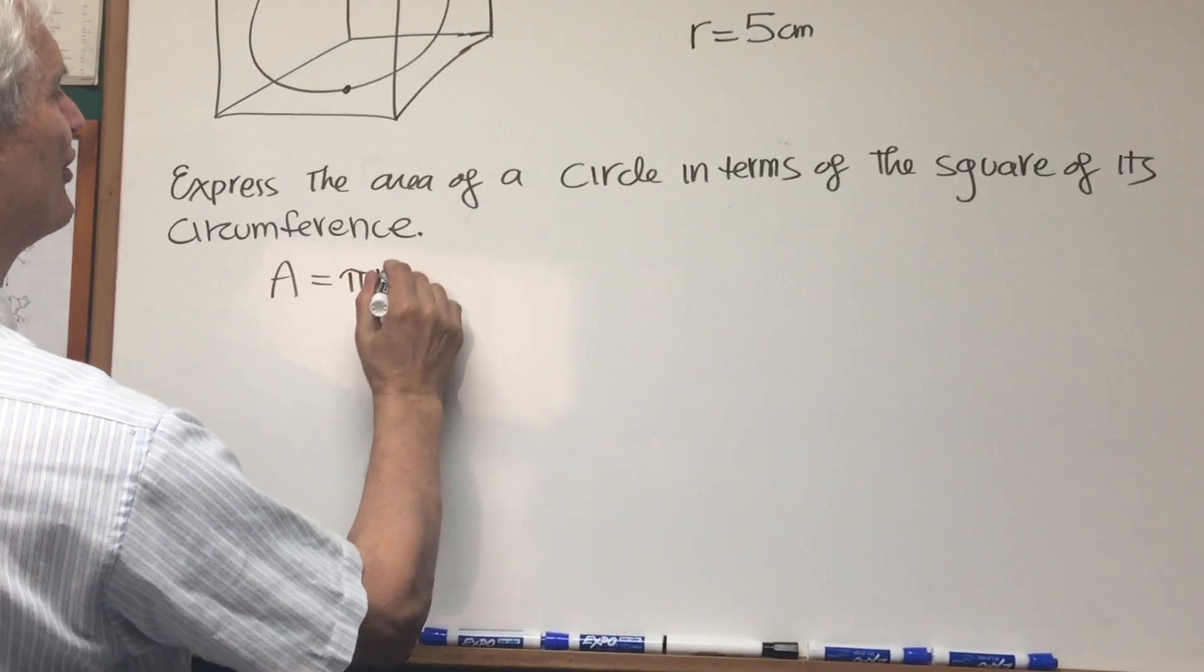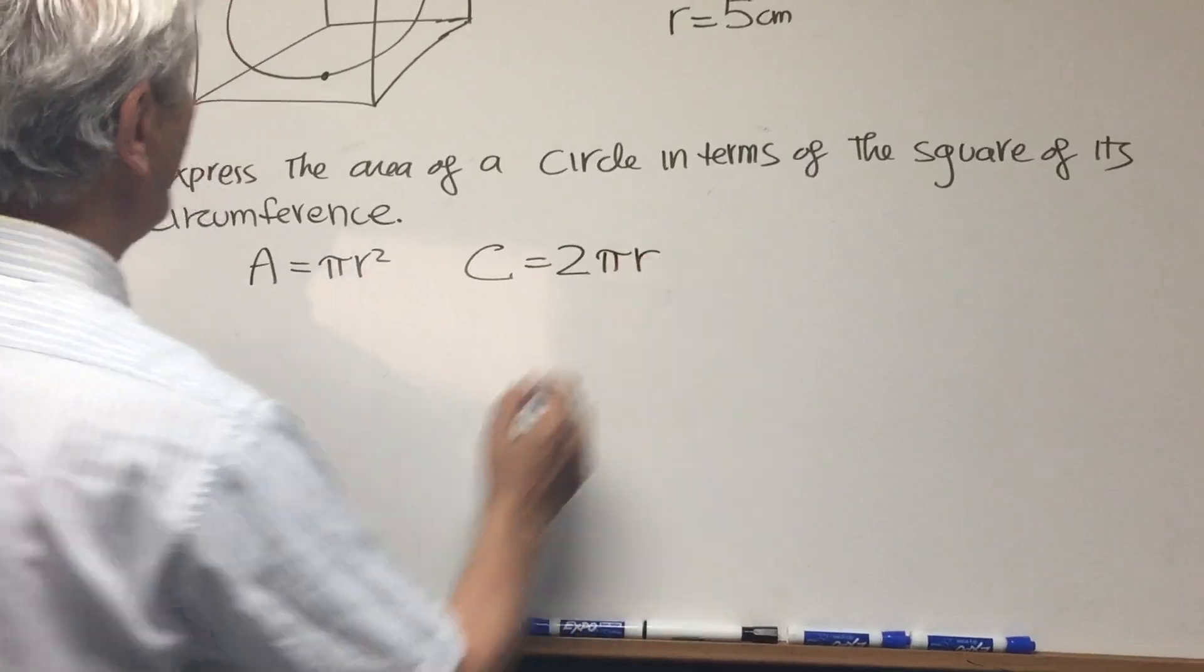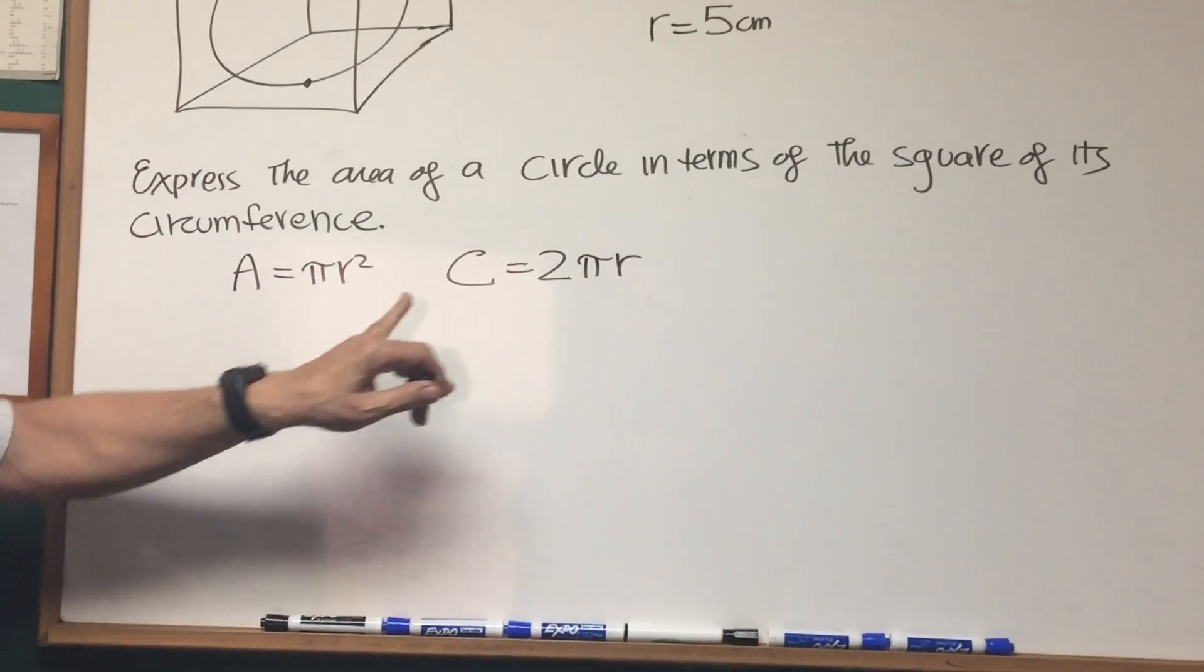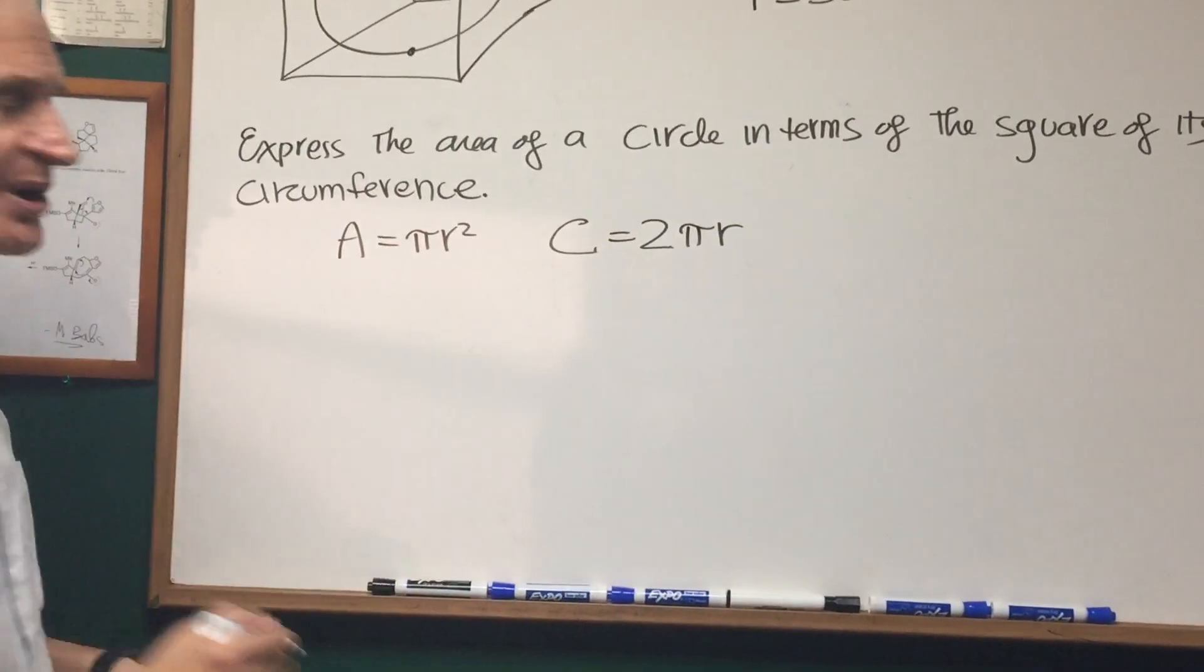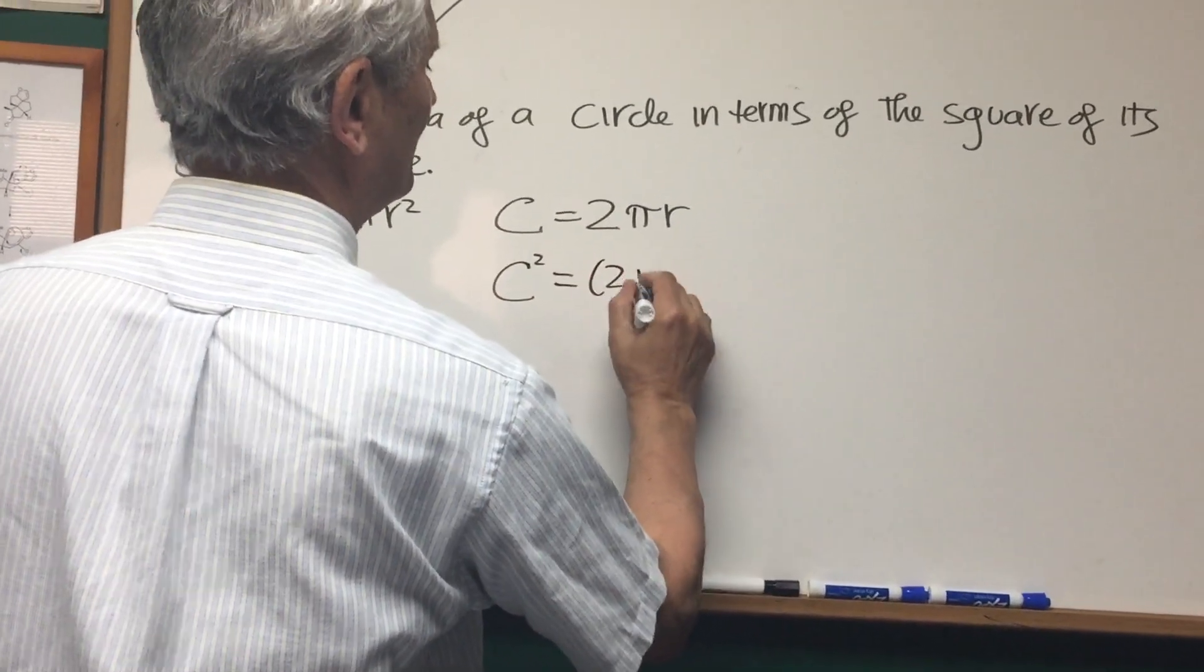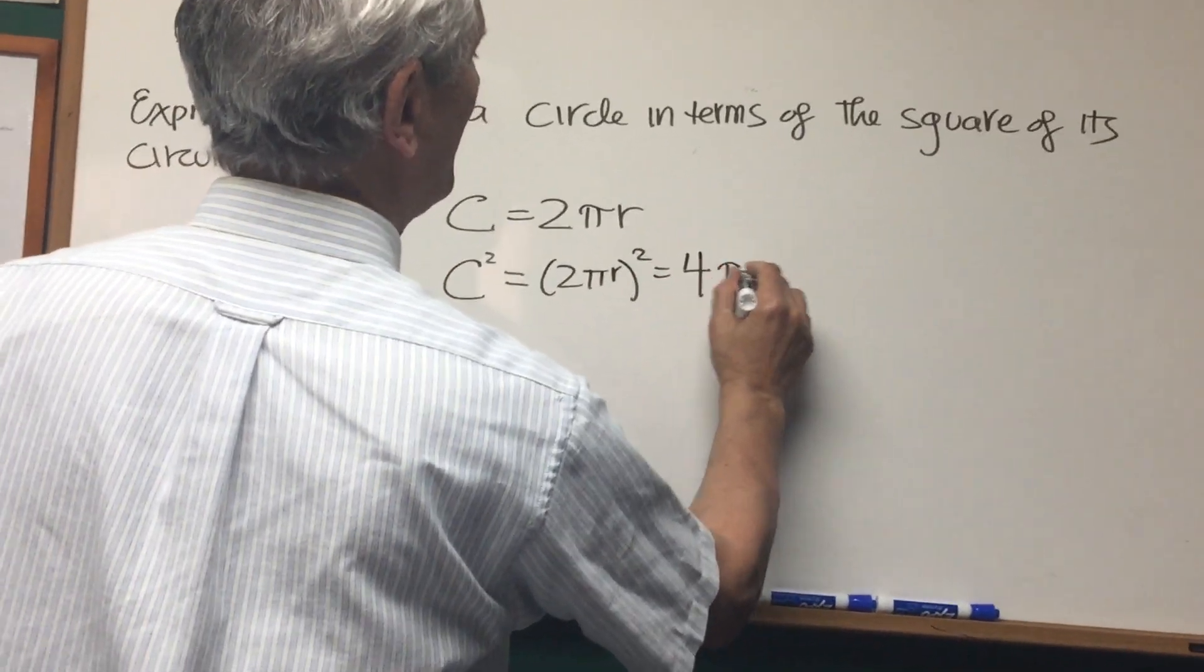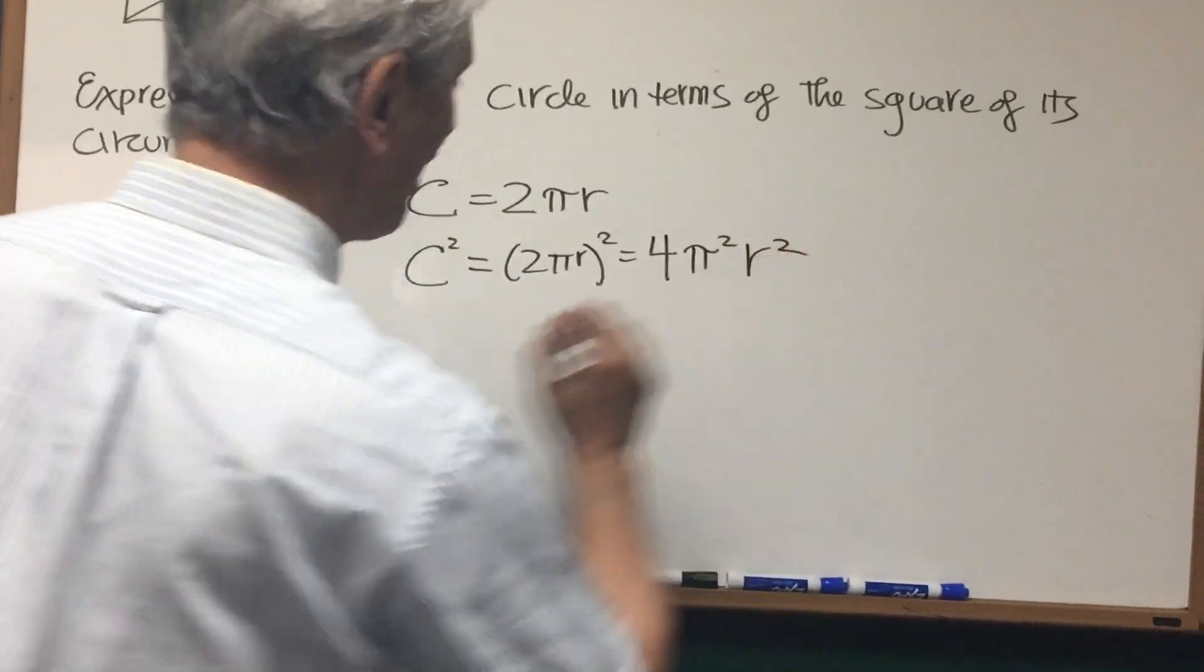Area is equal to pi r squared. The circumference is equal to 2 pi r. But we want the area expressed in terms of the square of the circumference. So let's square the circumference and see what we get. It's 2 pi r quantity squared, which gives us 4 times pi squared times r squared.